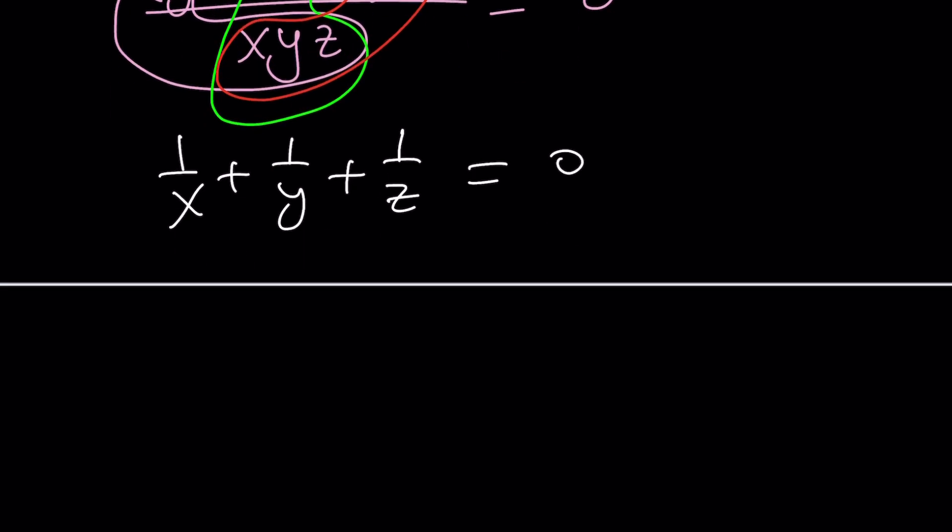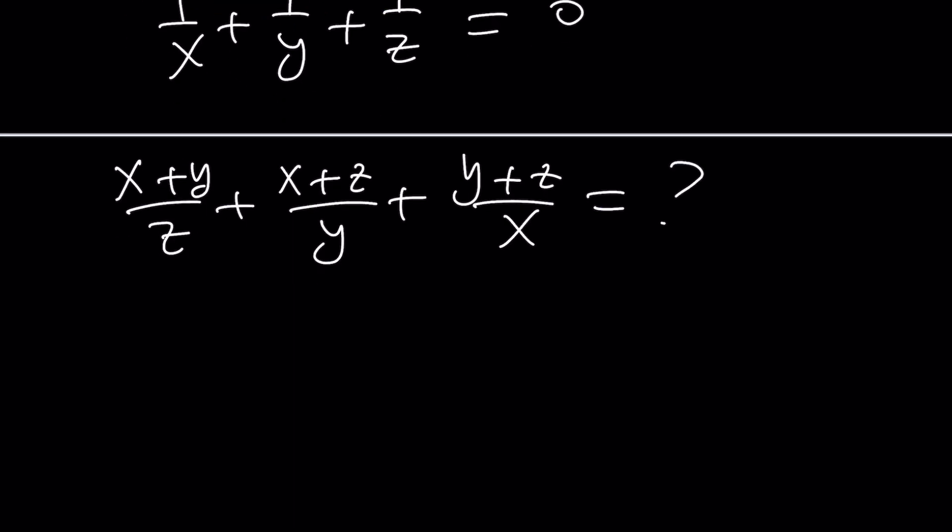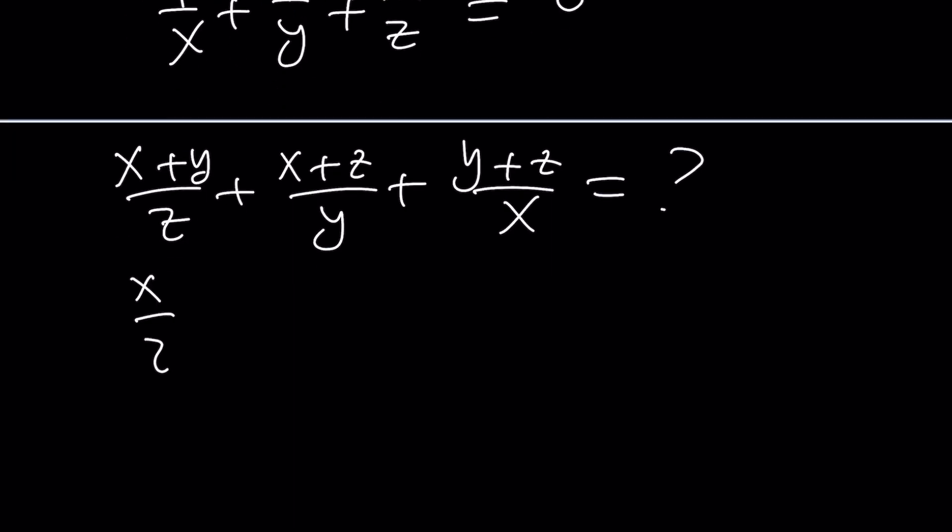So something interesting comes up from the equation we were given. The sum of the reciprocals of these expressions is zero. How does that help? Here's how you can use it. Take the second expression and also split it up. We can go ahead and write this as x/z plus y/z plus x/y plus z/y plus y/x plus z/x.